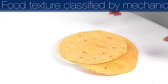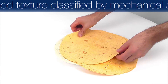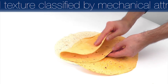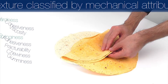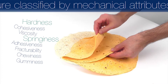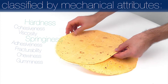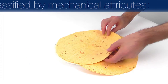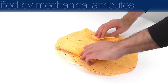Food texture can be scientifically classified by a number of mechanical attributes: hardness, cohesiveness, viscosity, springiness, adhesiveness, fracturability, chewiness, and gumminess.